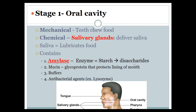The oral cavity — your mouth — does mechanical digestion with teeth, and also chemical digestion: salivary glands secrete enzymes including amylase, which targets starch (amylose) and breaks it down into disaccharides for later processing. Saliva also contains mucin for mucus to protect the mouth lining, buffers to prevent dissolving your teeth with acid, and antibacterial agents.